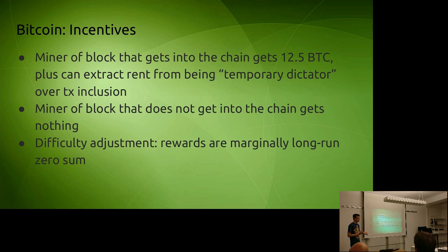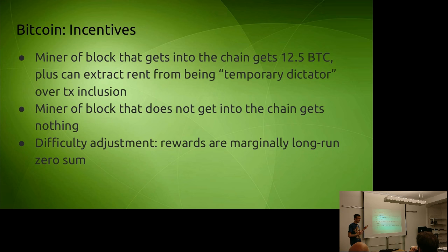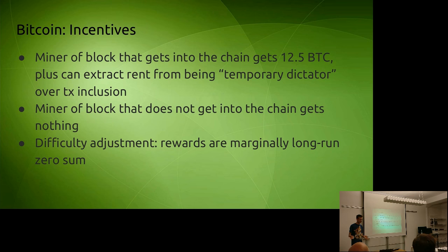Incentives: the miner of a block that gets into the chain gets 12.5 Bitcoins plus the ability to extract economic rent from being a temporary dictator over transaction inclusion. If the miner of the next block wants your transaction to get in, it gets in; if not, it doesn't. It's temporary because even if the first miner doesn't include your transaction, some future miner might. But this privilege is part of a miner's incentive.